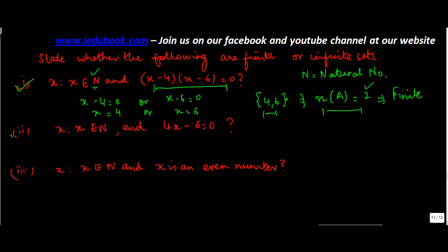Now moving on to the second one: x such that x belongs to natural number and 4x minus 6 is equal to 0. If 4x minus 6 is equal to 0, as I solve this I get 4x is equal to 6, change the sign, or x is equal to 6 by 4 is equal to 3 by 2. But we know that 3 by 2 is not a natural number.